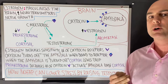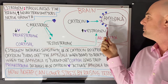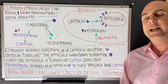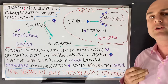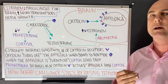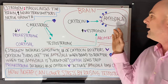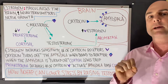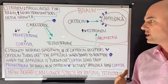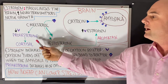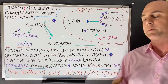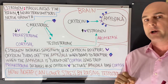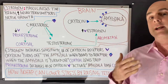Once the oxytocin receptors on the amygdala are increased in number and sensitivity, it increases the chance of oxytocin binding to the amygdala. When oxytocin binds to the amygdala, it tells the amygdala to shut down, and as a consequence cortisol levels drop.